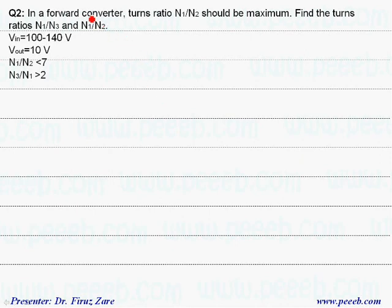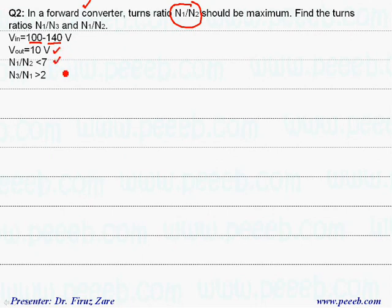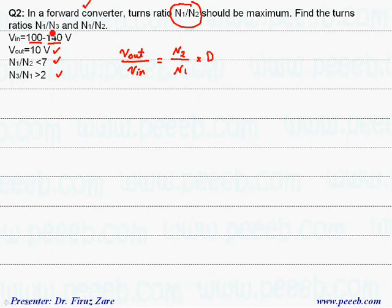In this example, we are going to design a forward converter, and the point is that the turns ratio should be maximum. The condition is that the input voltage fluctuates between 100 and 140 volts, output voltage should be kept at 10 volts, and there is a limit for the turns ratio. Looking at the conversion ratio, Vout over Vin equals N2 divided by N1 times duty cycle. With input voltage at minimum: 10 divided by 100 equals N2 over N1 times duty cycle.